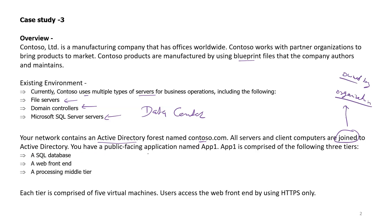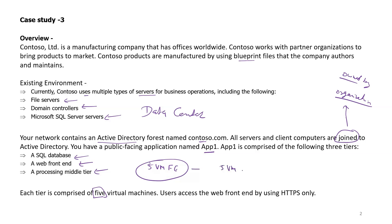There is a public-facing application named F1, comprised of three tiers: a SQL Server database tier, a web front-end tier, and a processing middle tier. Each tier comprises five virtual machines — so five VMs in the front-end tier, five in the application tier, and five in the database tier.